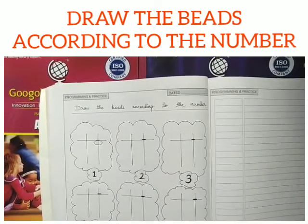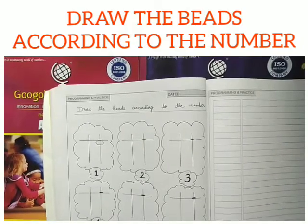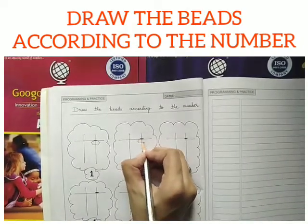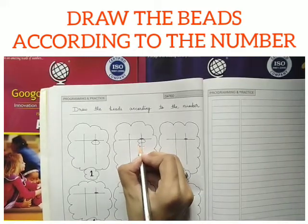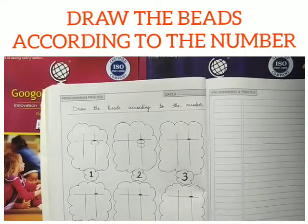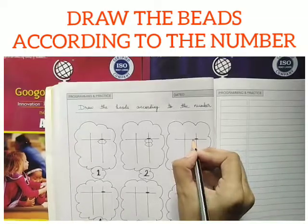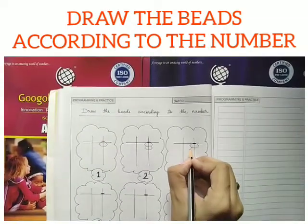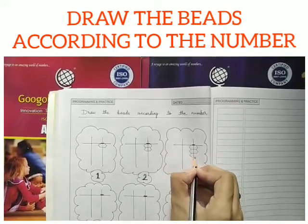Now, for 2, what you have to do? You have to draw 2 lower beads — like this, 1 bead and 2 beads. For 3, you have to draw 3 lower beads: 1, 2, and 3.